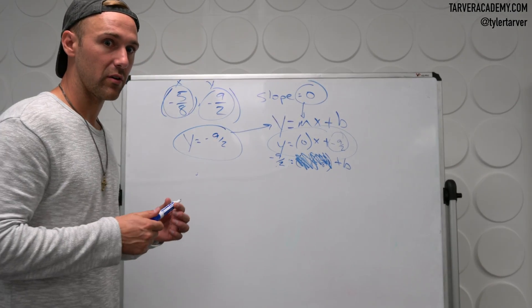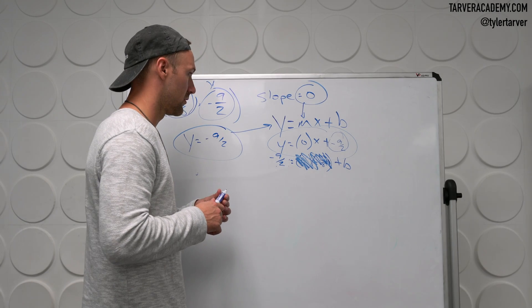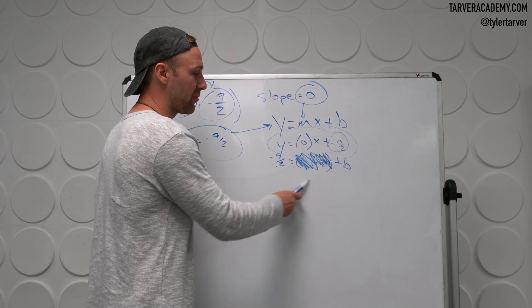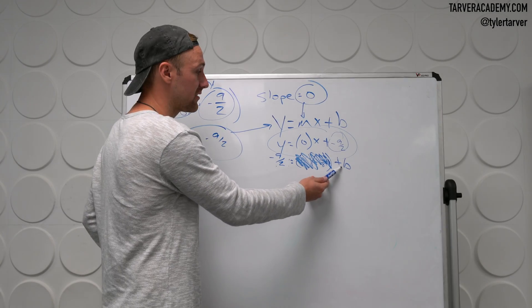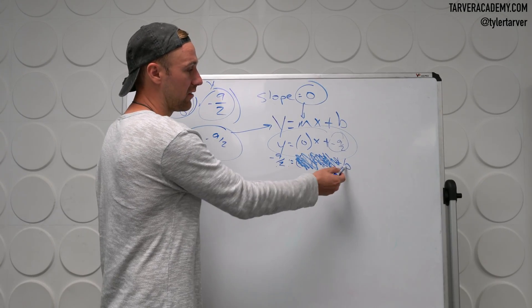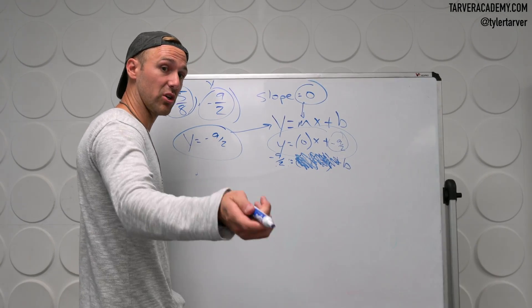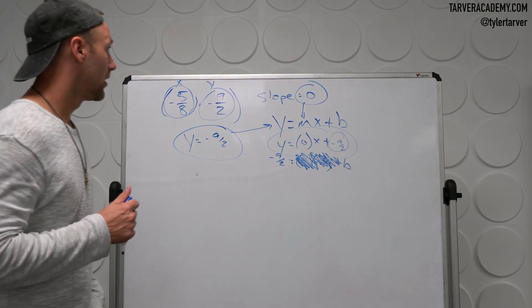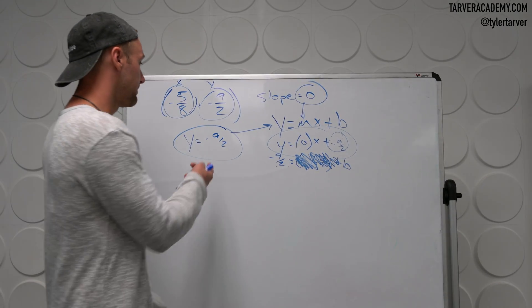Student question: when you move it over, don't you add it? You would, but we don't have to move it over because we're trying to figure out what B is. And once we canceled all that out, it tells us what B is. Great question. And that's the equation.